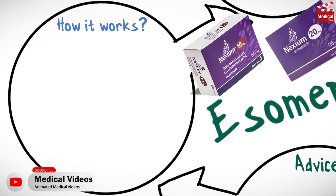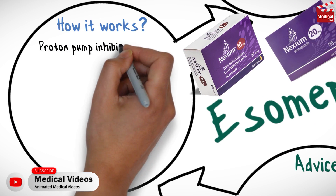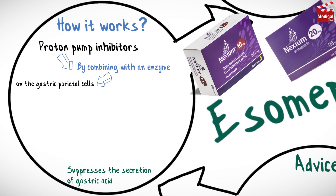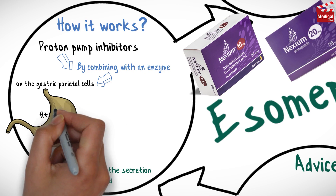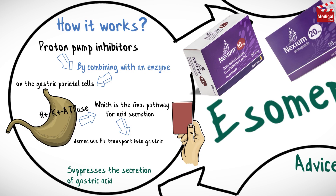Esomeprazole belongs to a category of drugs called proton pump inhibitors. It suppresses the secretion of gastric acid by combining with an enzyme located on the gastric parietal cells called hydrogen-potassium ATPase, which is the final pathway for acid secretion. This decreases hydrogen ion transport into the gastric lumen, leading to reduction of the secretion of gastric acid.